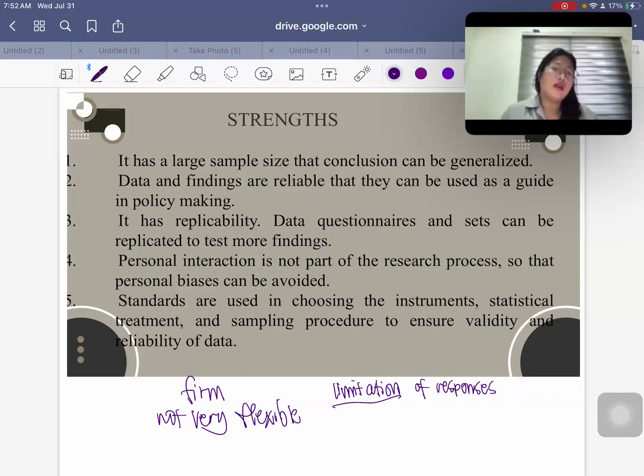There are also cases when the responses can be inaccurate. Who knows if the respondent just selected or just guessed whatever it is. And then, of course, large sample sizes are considered costly. They cost a lot. So every approach, every research type would always have the ups and downs.